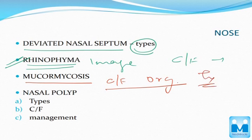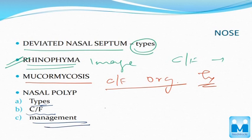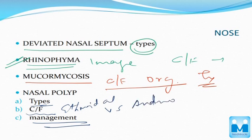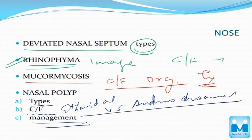Coming to nasal polyp, you have to know the types — ethmoidal and choanal polyps — along with clinical features and management. It's better to study this in tabular form to know the differences between ethmoidal (antrochoanal) and choanal polyps.